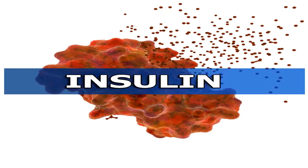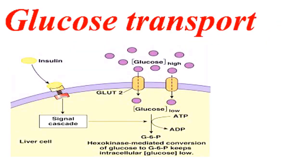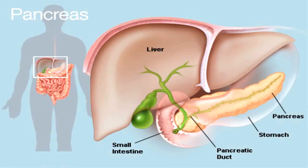The hormone insulin moves sugar from blood into cells to be stored or used for energy. With diabetes, your body either does not make enough insulin or cannot effectively use the insulin it does make. As a result, the blood sugar level goes high.